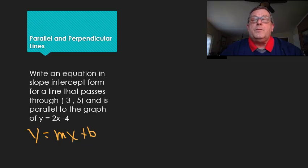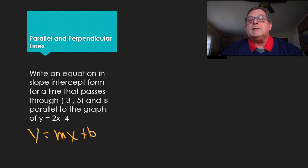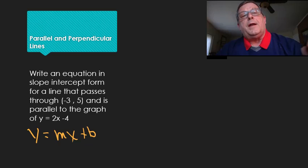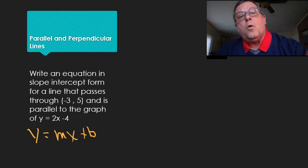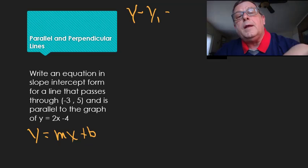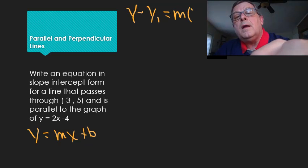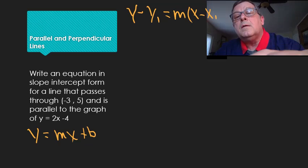Now, if it's going to be parallel, it's going to have the same slope. Let's set that aside and write this line. I'm going to start with point-slope: y minus y1 equals m times x minus x1.